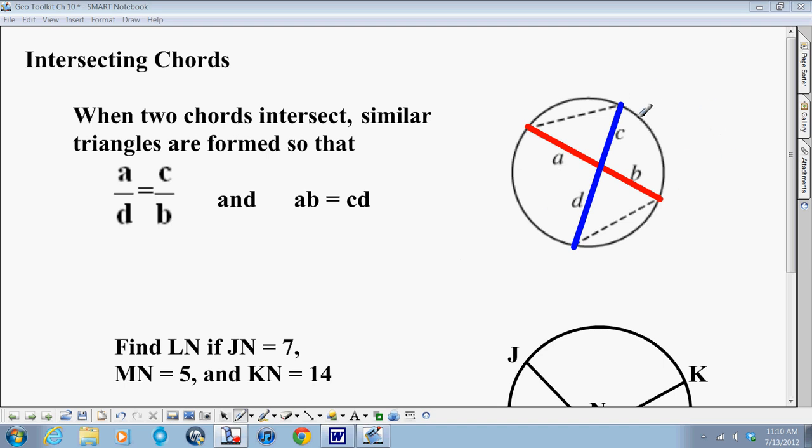Go ahead and draw this picture into your toolkit. You'll notice we have two chords that intersect right here at this point. We have one chord, that's the blue one, and here's the other chord. They intersect in the middle of the circle.